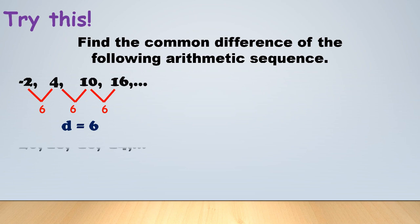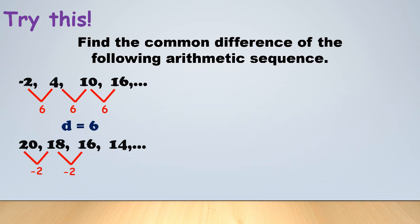Next: 20, 18, 16, 14. Notice the terms are descending, which affects the common difference. Subtracting: 18 minus 20 = -2, 16 minus 18 = -2, 14 minus 16 = -2. So D = -2. Remember: if the terms of your arithmetic sequence are descending, the common difference is negative.